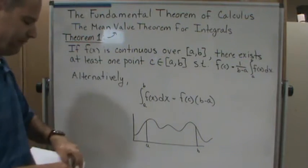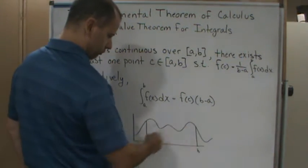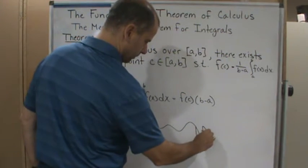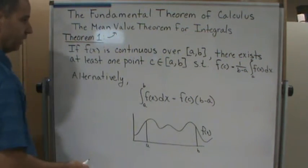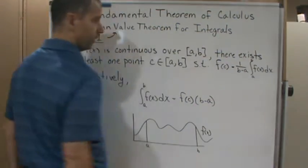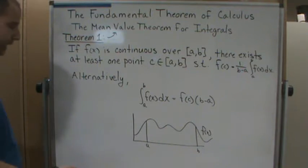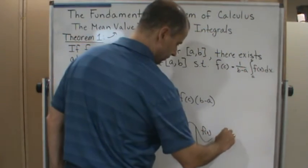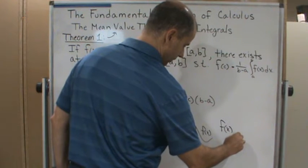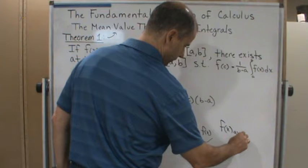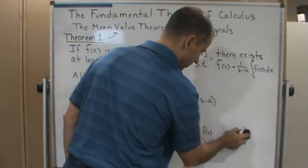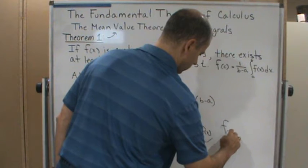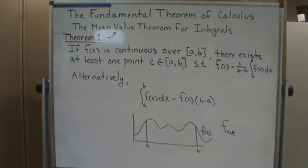So what is this saying? This is saying that if I have a continuous function, let's say here, so this is f(x), and I'm on a closed interval from a to b, I can calculate using this integral the average value of the function. The average value of the function is going to give me a number.